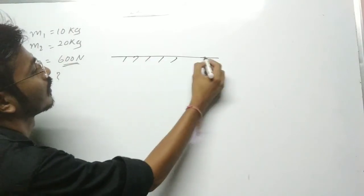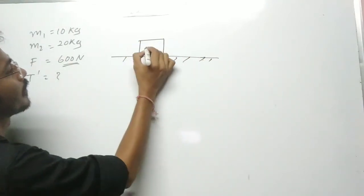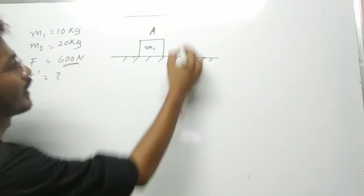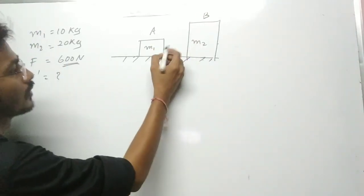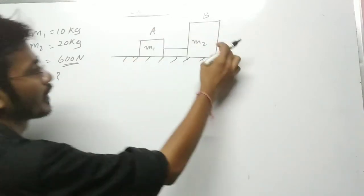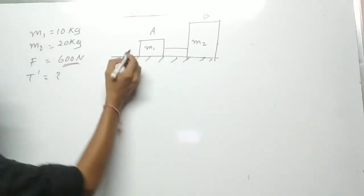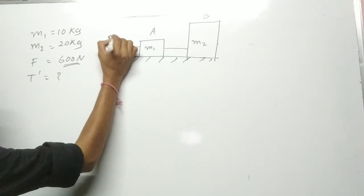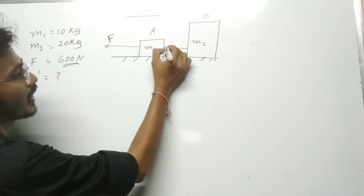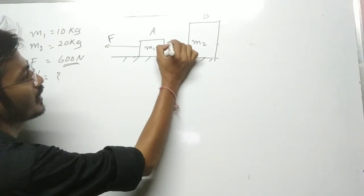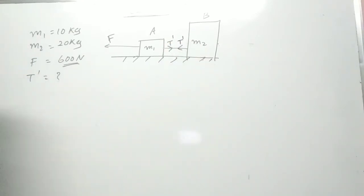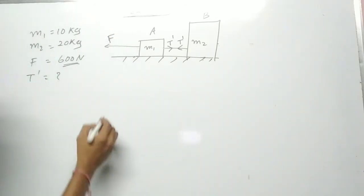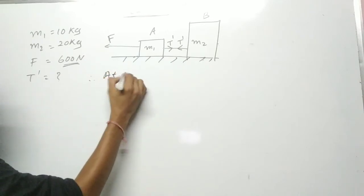Now consider Case number two. The surface and objects are the same: m1 (block A) and m2 (block B), connected by a string. But now in this case, the force F is applied at A (m1 side) instead. So the force is applied here, tension T dash will generate in the string. We have to find T dash.